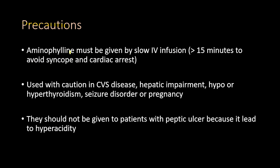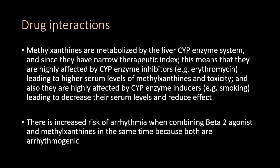Regarding precautions: aminophylline and methylxanthines in general must be given by slow IV infusion over more than 15 minutes to avoid syncope and cardiac arrest. They are used with caution in cardiovascular disease, hepatic impairment, hypo- or hyperthyroidism, seizure disorder, and pregnancy. They should not be given to patients with peptic ulcer because they lead to hyperacidity.